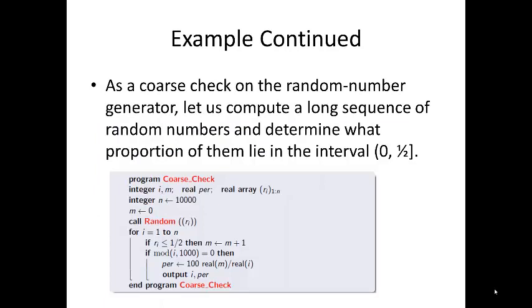What we can do is we can check this. And as a course check of the random number generator, we can compute a long sequence of random numbers and determine what portion of them lie in the interval 0 to 1 half. The answer should be somewhere in the neighborhood of 50%. Of course, we'll need to tabulate the results, so here's some pseudocode to do that and carry out the experiment.